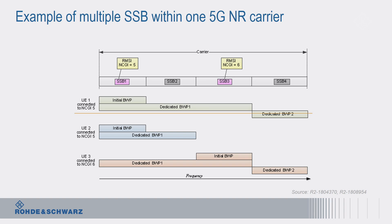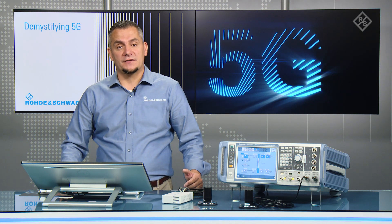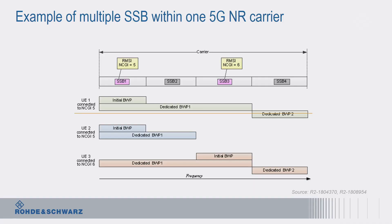Here is an example from the standard. You can see a carrier with a certain bandwidth — for instance, thinking about our sub-6 GHz example transmitting at 3.5 GHz, this could be a 100 MHz wide carrier. BWP stands for bandwidth parts, which is an essential feature in 5G NR compared to LTE. Mobiles can be assigned up to four bandwidth parts, using different numerologies — an interesting topic for another video. But back to the original question: you can see in this example from standardization meetings that multiple SSBs are transmitted throughout the carrier.